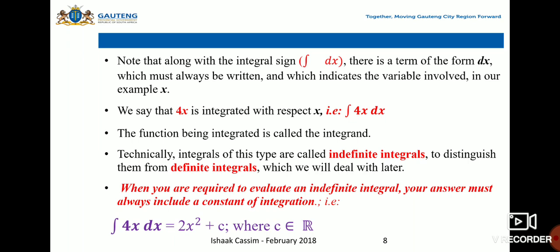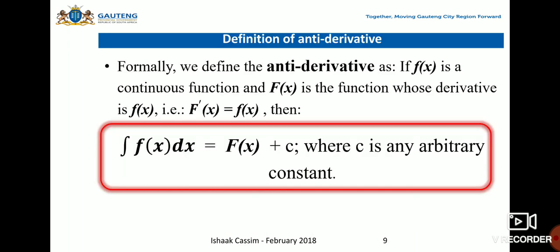Definition of antiderivative: Formally, we define the antiderivative as follows. If f is a continuous function and F is the function whose derivative is f, that is F' = f, then ∫f(x)dx = F(x) + C, where C is an arbitrary constant.